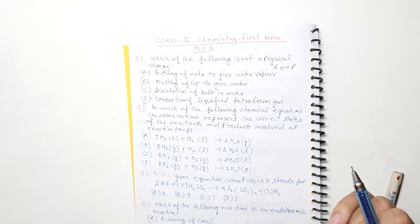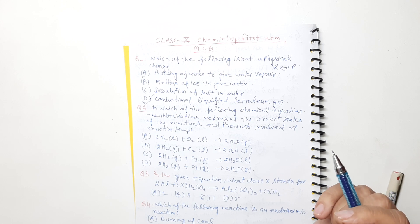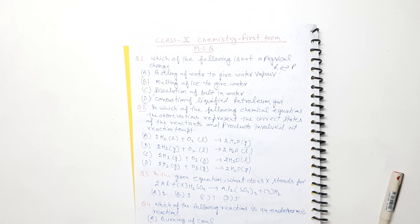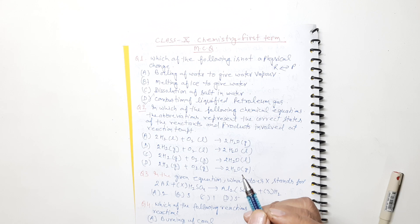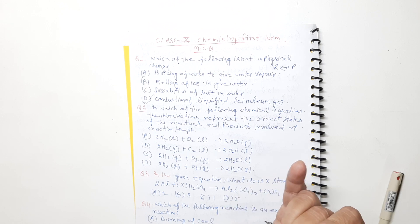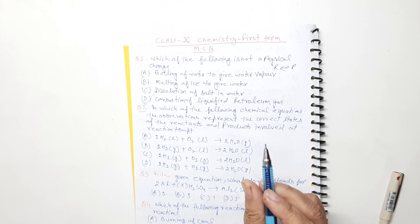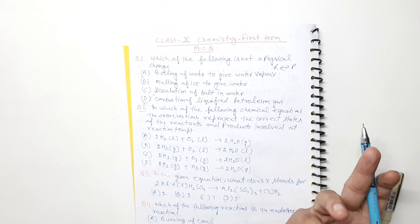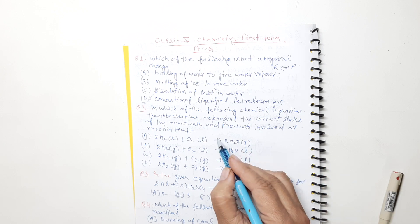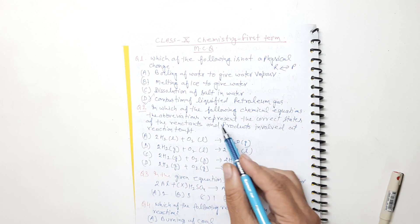In which of the following chemical reactions does the abbreviation represent the correct states of the reactants and products involved at the reaction temperature? This question is about the state symbols used in chemical equations — 'l' means liquid, 'g' means gas, an upward arrow means gas evolved, a downward arrow means precipitate. When we write chemical reactions, we mark these state symbols and sometimes catalysts.